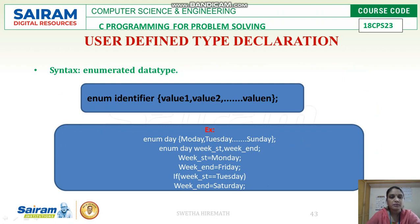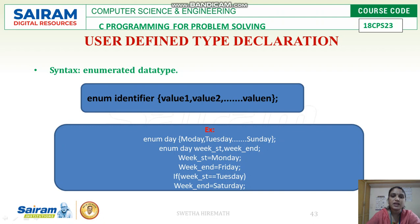The next user-defined type is enumerated data type. 'enum' is the keyword, followed by an identifier name and the set of values it will hold — only these values can be assigned to variables of this type. For example, 'enum day' holds Monday through Sunday. Two variables, 'week_start' and 'week_end', are declared of type day. 'week_start' is assigned Monday and 'week_end' is assigned Friday — both are valid because they are present in the value list.